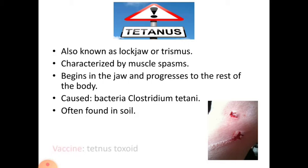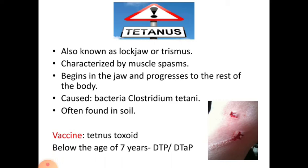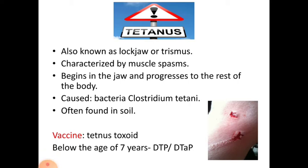The spasms occur frequently for three to four weeks. This infection can be prevented by proper immunization with the tetanus vaccine. The name of the vaccine is tetanus toxoid, which can be given to children under the age of seven years, and in a combined vaccine with diphtheria and pertussis known as DTP or DTaP.